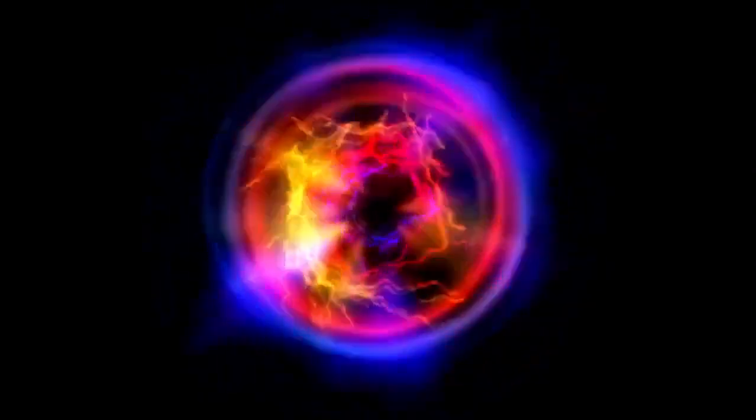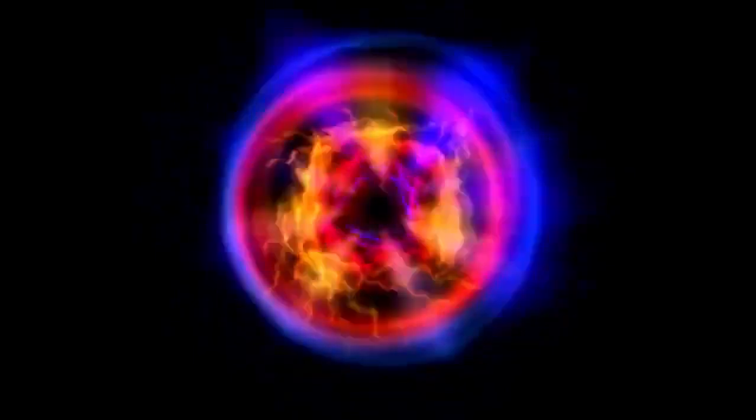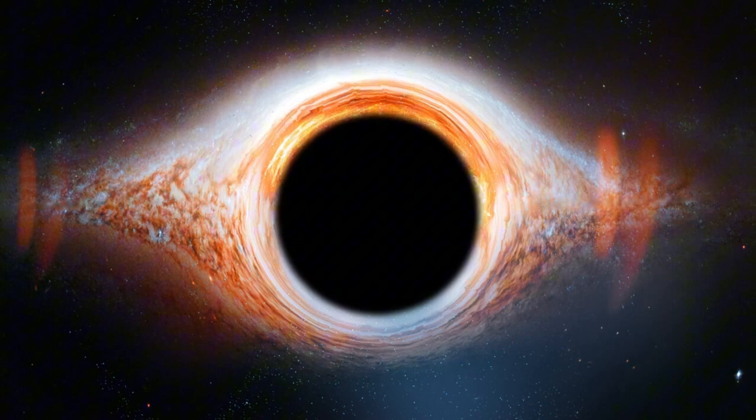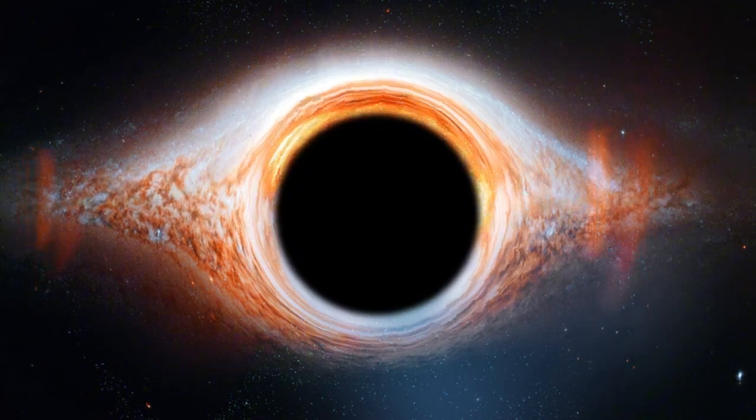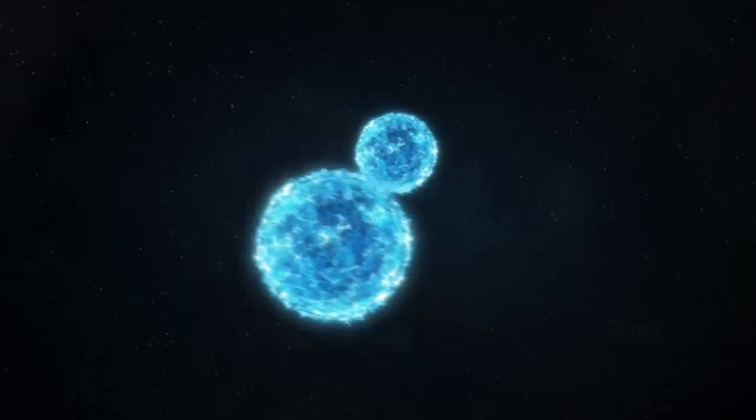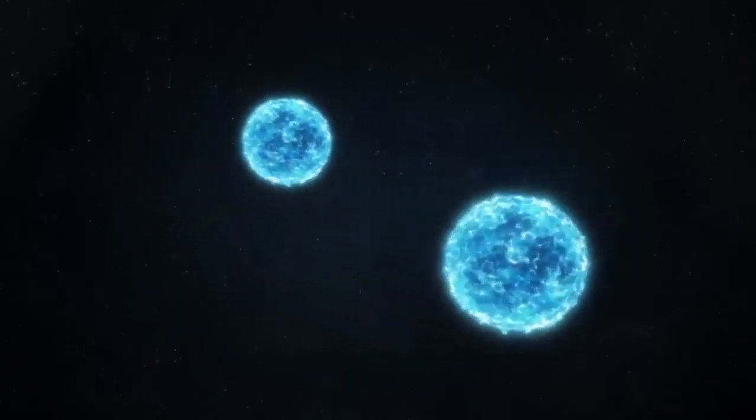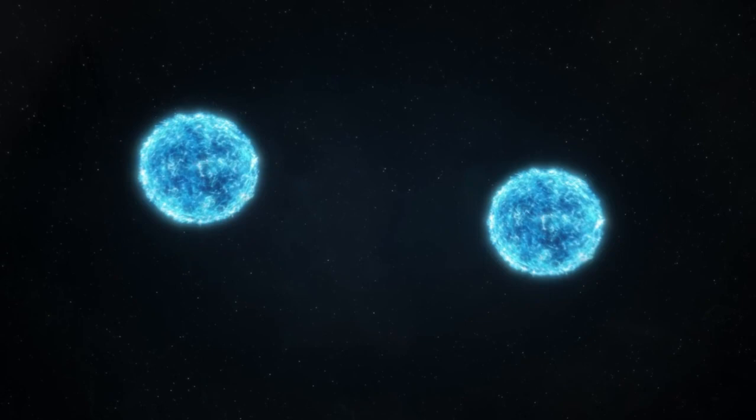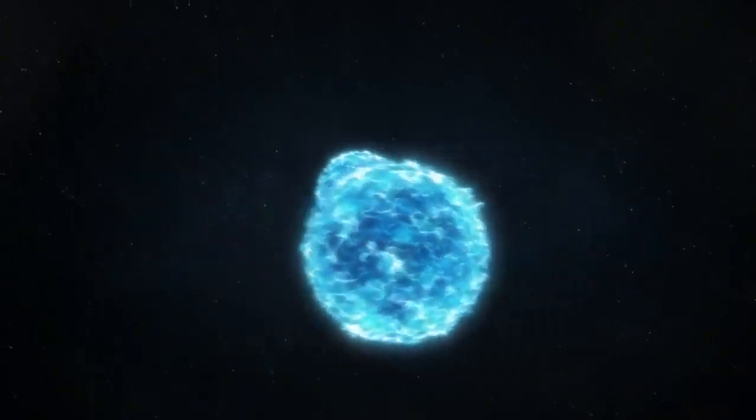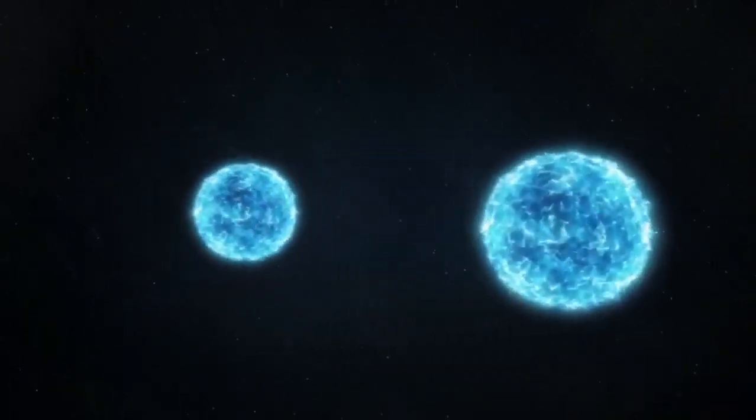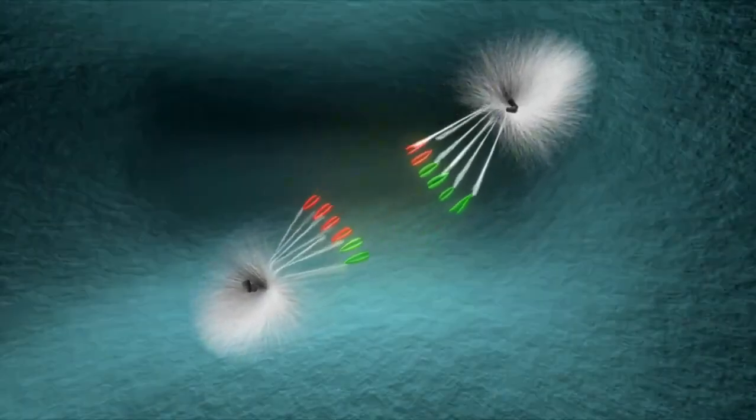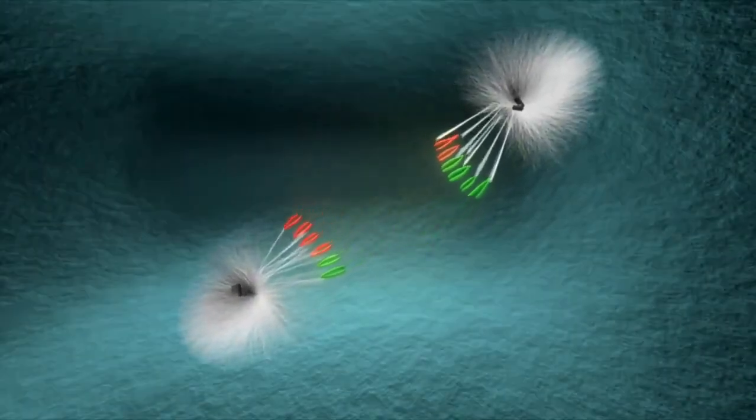But what happens after a star like Betelgeuse goes supernova? As we stand on the brink of the Betelgeuse supernova, it's like we're in a front row seat for cosmic history. But what's going to happen to this star? Well, there are a couple of possibilities. One scenario is that the core collapses, giving birth to a neutron star, a super dense and fascinating object. Another possibility is that Betelgeuse's core becomes so massive that it forms a black hole, a place where even light can't escape.